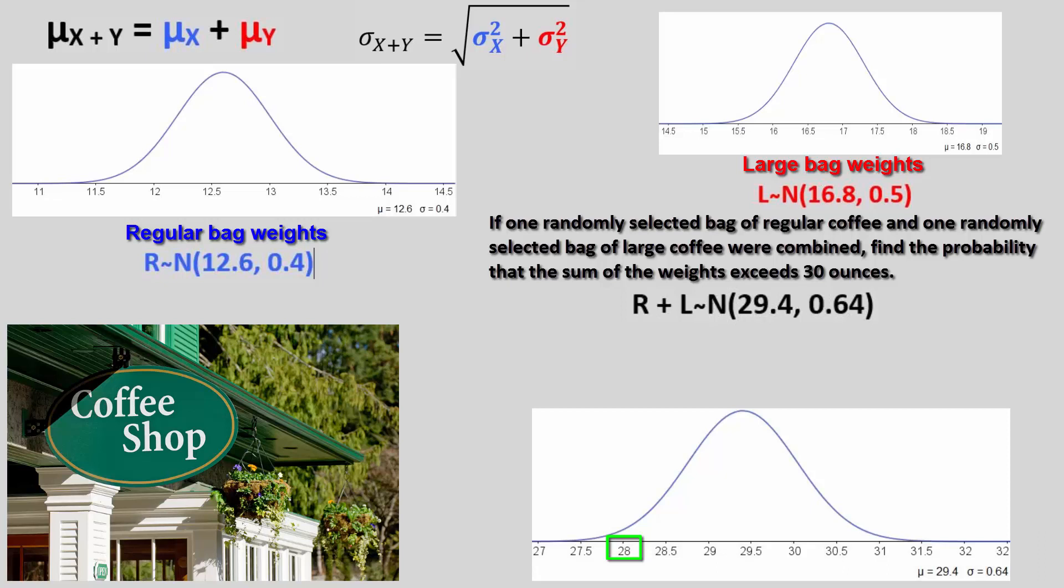This could literally occur with an infinite number of combinations. One possible scenario would be a regular bag weighing 12.22 ounces and one large bag weighing 15.78 ounces.